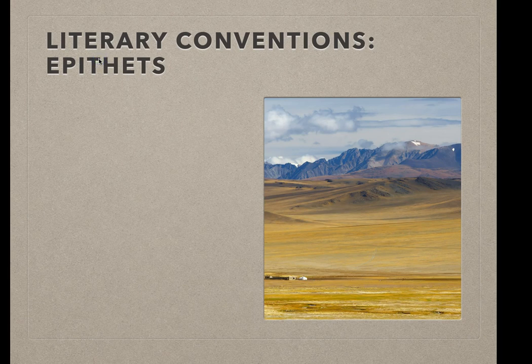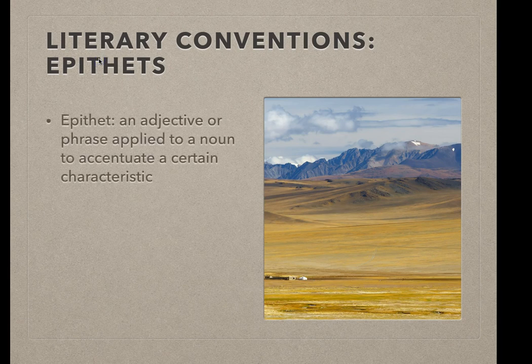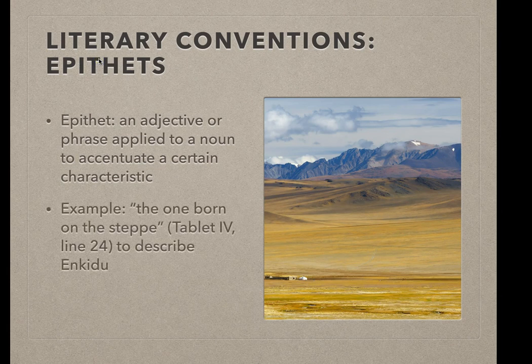In terms of literary elements, look for a classic feature of epics — this is the very first one after all — the epithet. An epithet is a short description for a character used in place of a name. We'll see epithets used in other epics this semester like the Odyssey and Beowulf. But in Gilgamesh, for example, Enkidu is referred to by an epithet, 'the one born on the steppe,' in Tablet 4, line 24, as well as other epithets in other locations. If you're wondering, this picture is of a steppe — that's the kind of landscape where Enkidu was born.